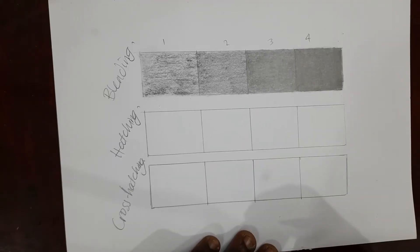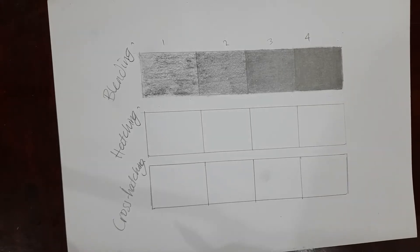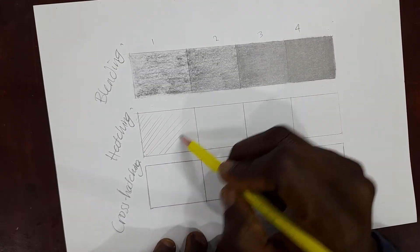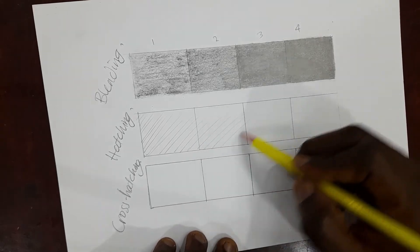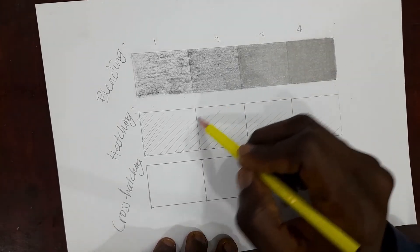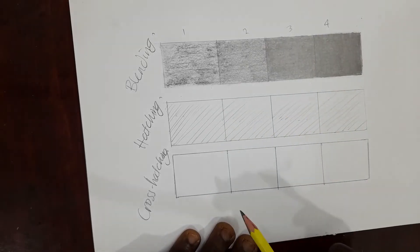Now, the next technique I will be teaching you will be the hatching technique. The hatching technique of shading is a technique where you use multiple lines in one direction. I already did a video on five different shading techniques. You can please check that and it will help you to know the different types of techniques.